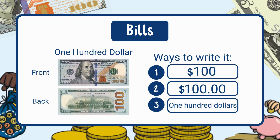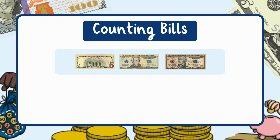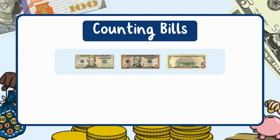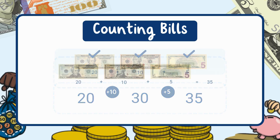Now that we know the value of dollar bills, let's see how we can add them together. We have a five dollar bill, a twenty dollar bill, and a ten dollar bill. First, let's arrange the bills from largest to smallest: twenty, then ten, then five. Start with twenty, add ten to get thirty, then add five to get thirty-five. The total is thirty-five dollars.